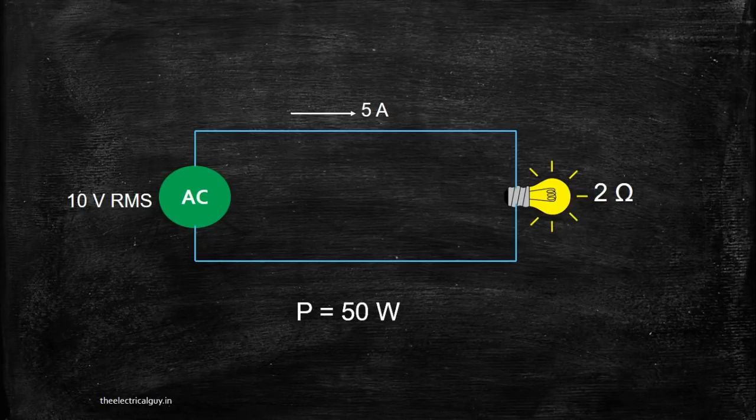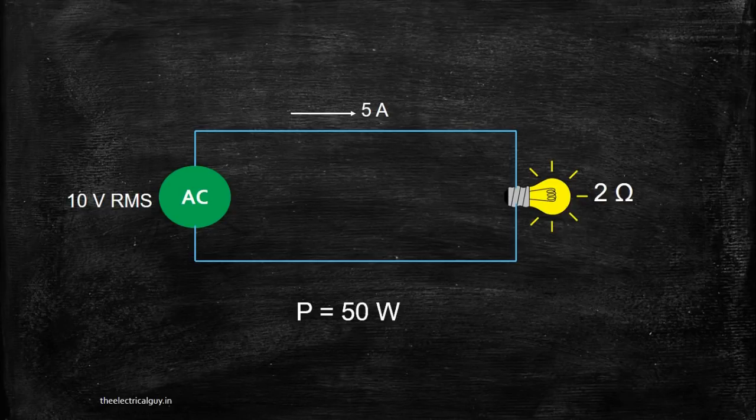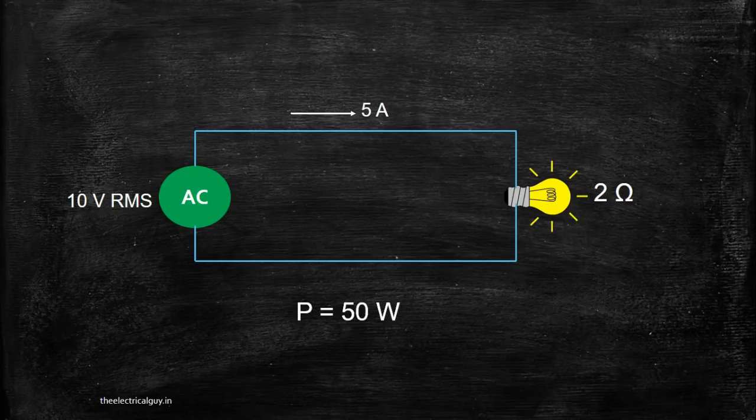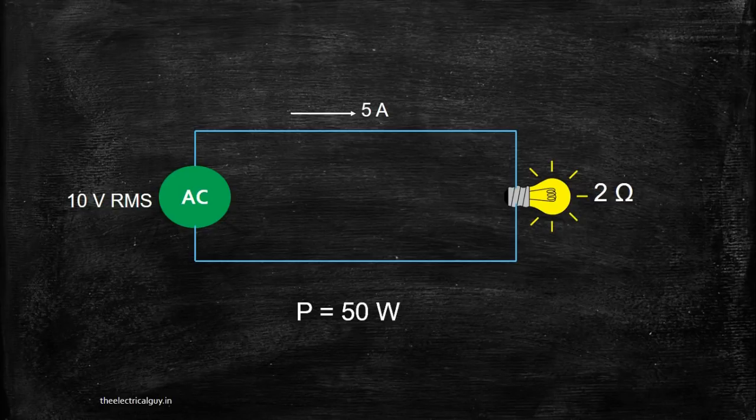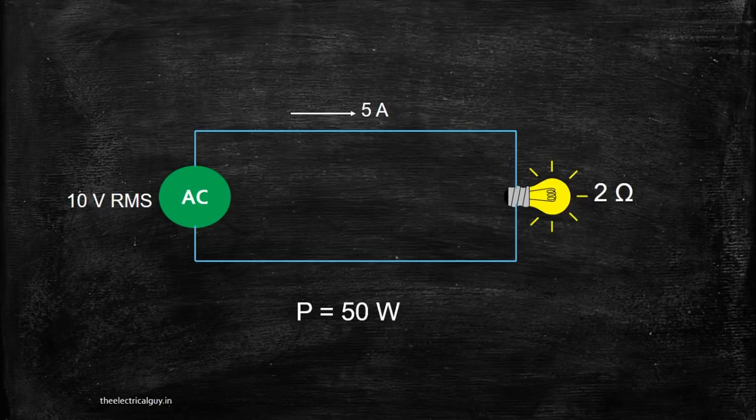RMS value is the best way to calculate the effective value of AC system. For instance, for calculating size of cable, considering RMS current measurement is always helpful. But for considering insulator in high voltage AC applications, peak value shall be considered rather than RMS value.